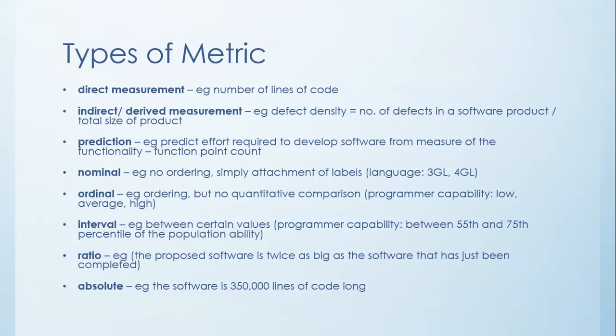You could also get indirect or derived measurements. So for example, defect density is equal to the number of defects in a software product over the total size of the product. So what we could do is we could measure the number of defects in your software product and we could measure directly the total size of the product, and then we can indirectly get this derived measurement which is called defect density.